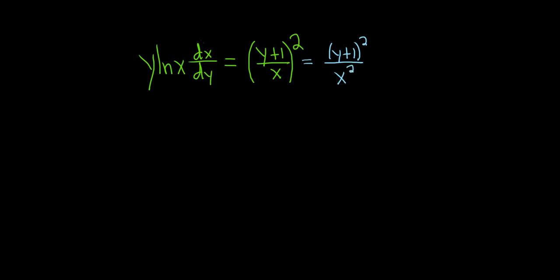So the first thing you'll notice is that there's a dx up here. That kind of implies that we want all of the x's on the left-hand side. So in order to do that, I'm going to multiply both sides by x squared so that we have x squared ln x dx.